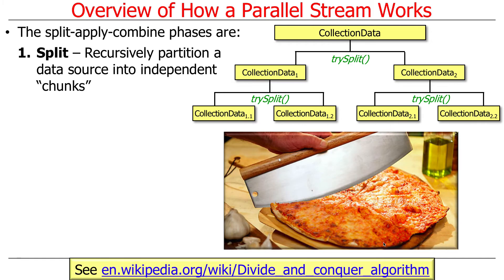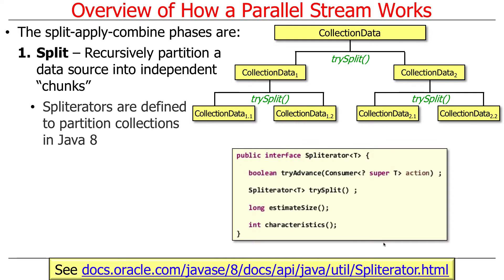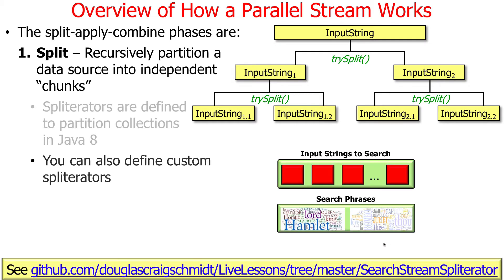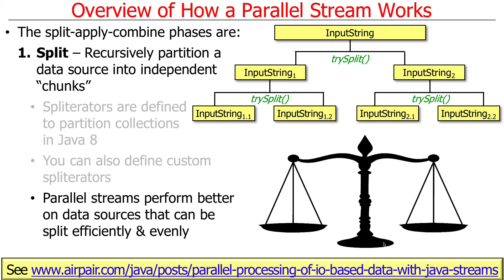In the split phase, you take your original data, like a collection, and split it up into pieces like slicing a pizza — that's what the spliterators are for. Spliterators are defined on collections in Java 8, or you can make your own custom spliterators. Parallel streams perform better if the data source can be split efficiently and evenly. Things like ArrayLists split really well; things like LinkedLists split really badly. Knowing those distinctions helps you become a better parallel streams programmer because you'll pick the right abstractions.